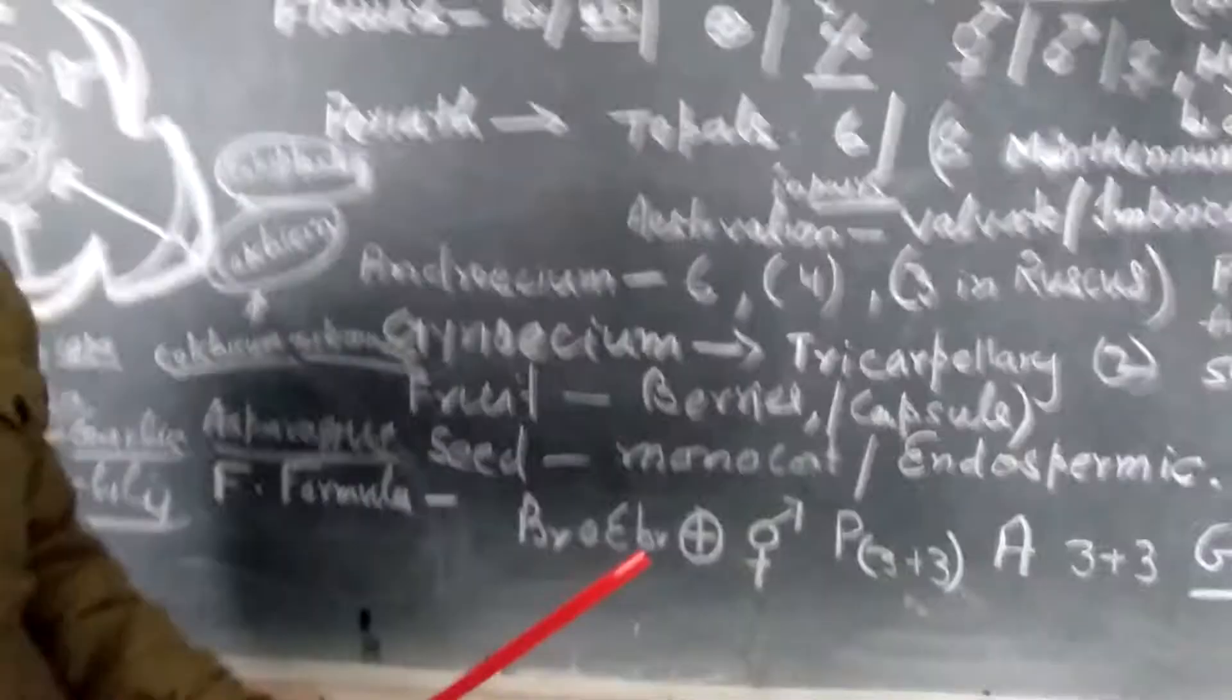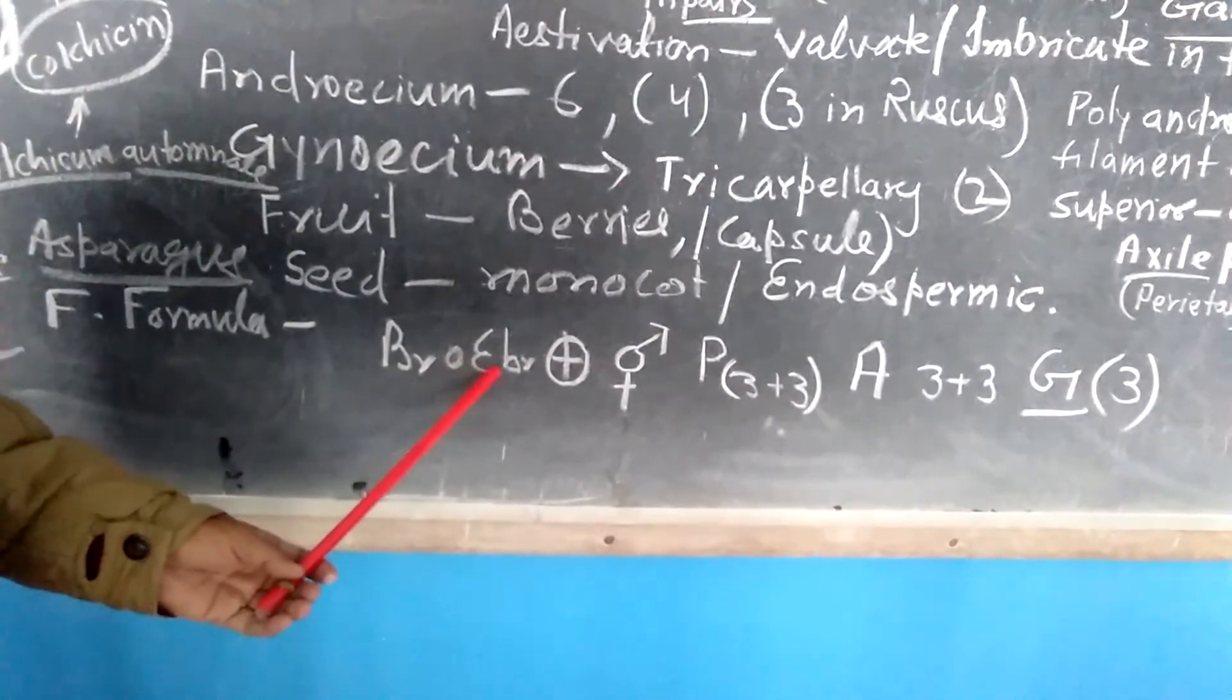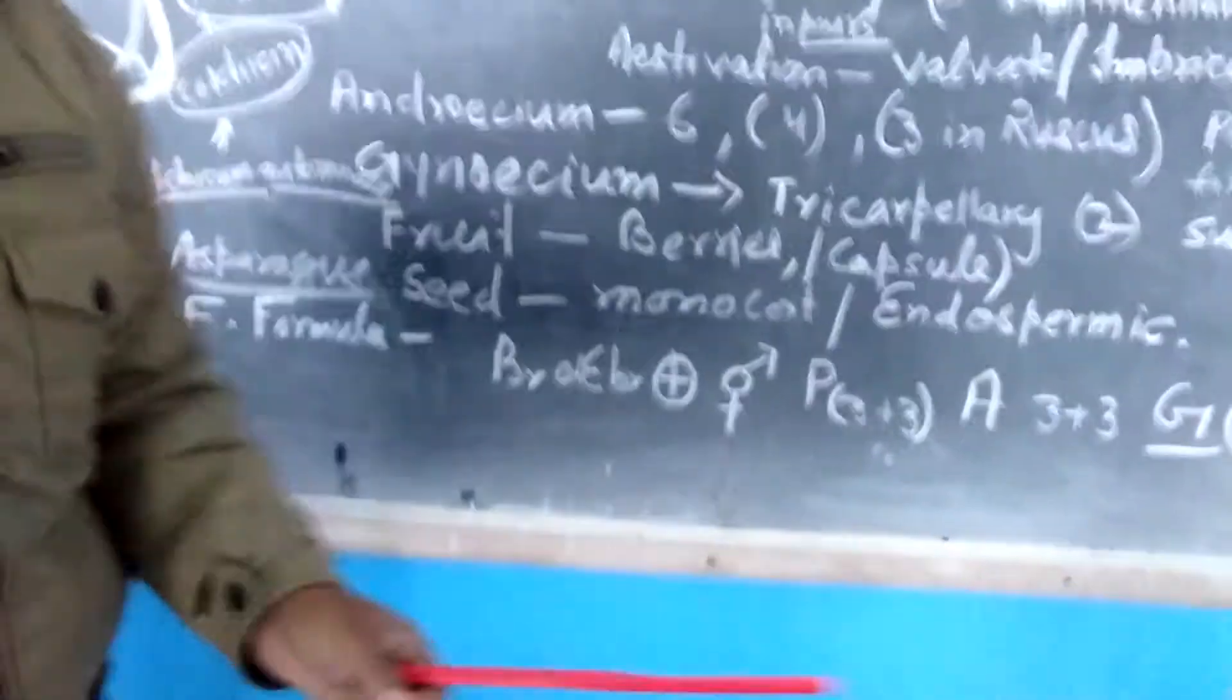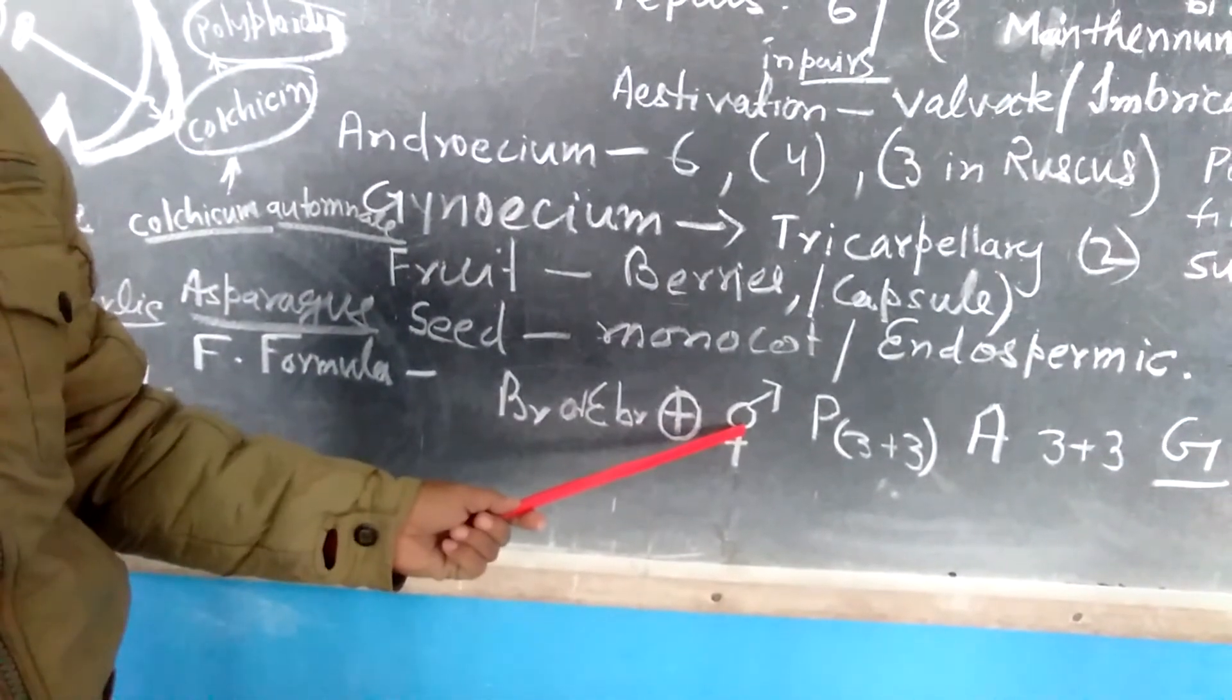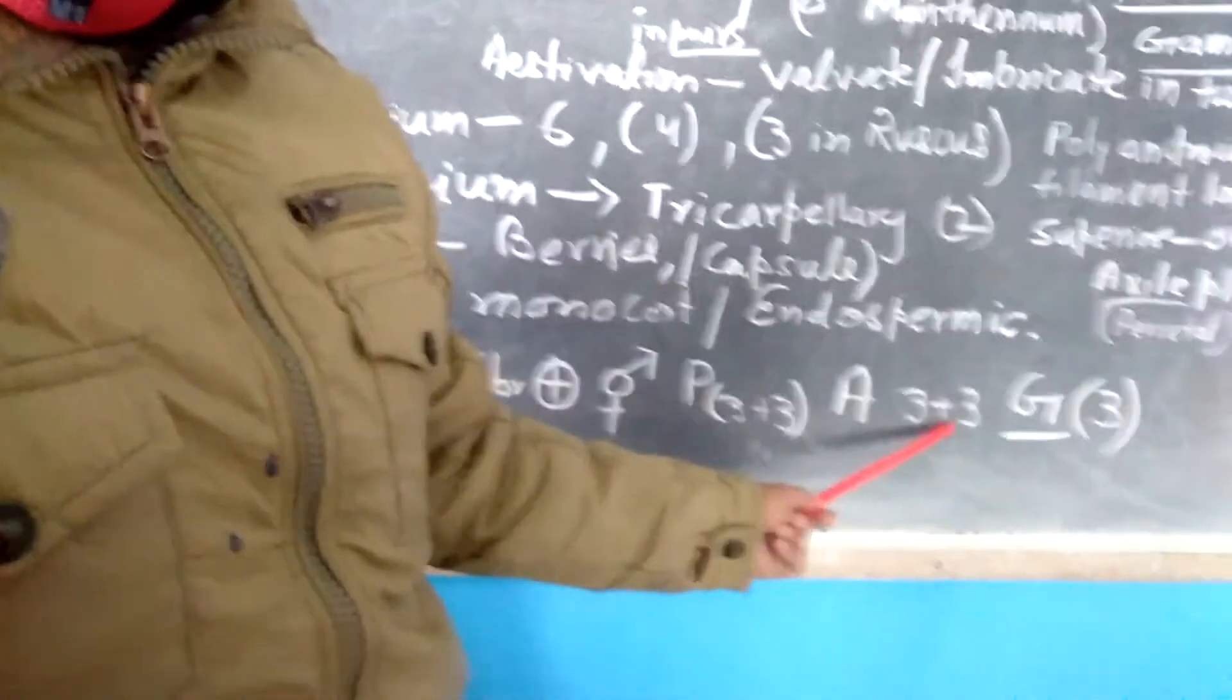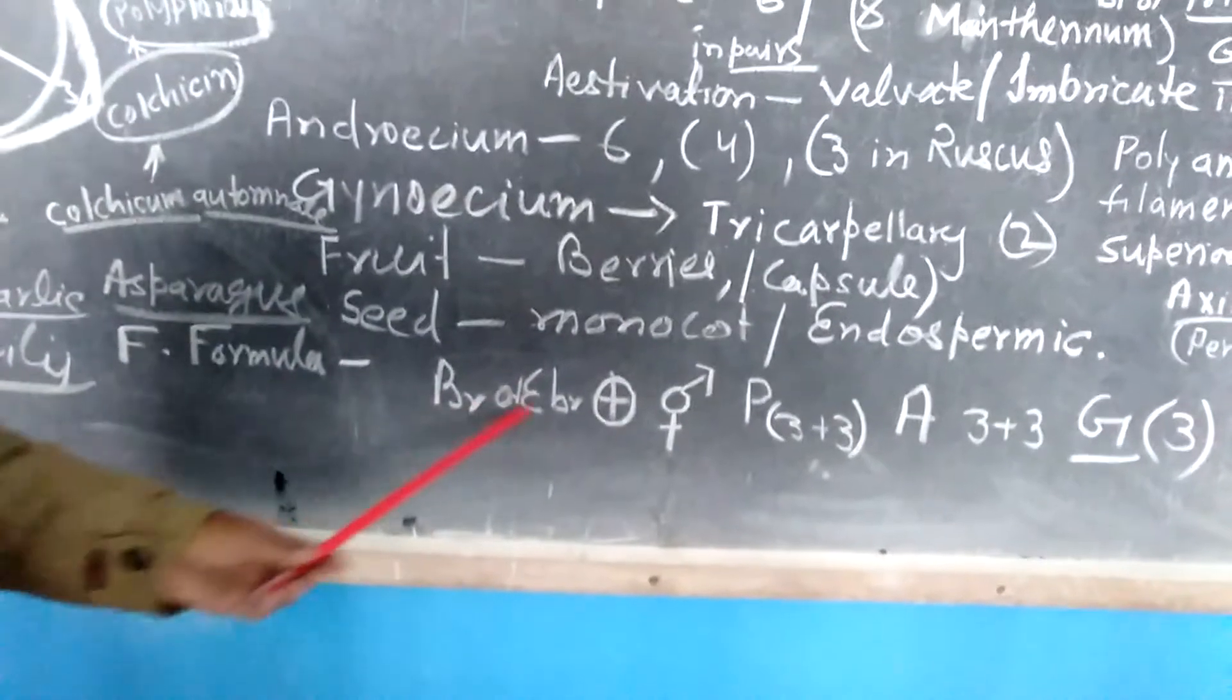When we come to the floral formula, we can write that the plant is bracteate or ebracteate, actinomorphic, bisexual, perianth 3+3 means in two rows, three in one row, three in another row, and they unite together gamophyllous, androecium 3+3 in two rows again, gynoecium ovary superior tricarpillary and syncarpous. In this way you can write floral formula.